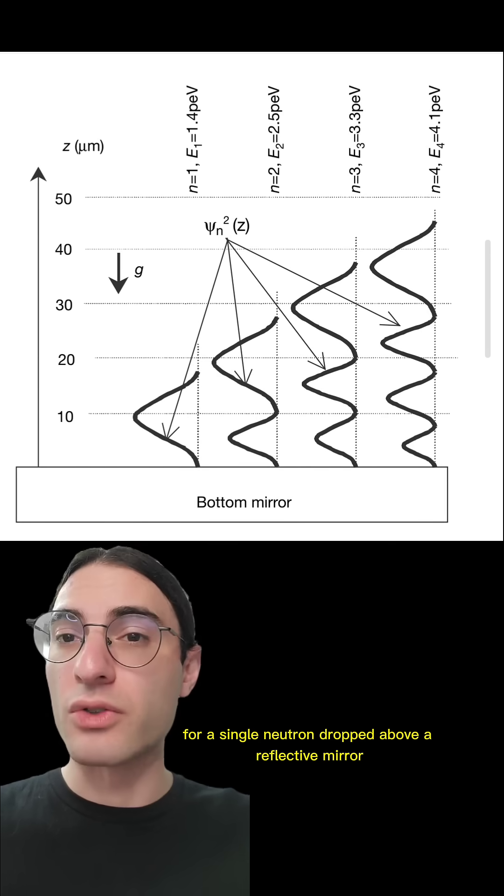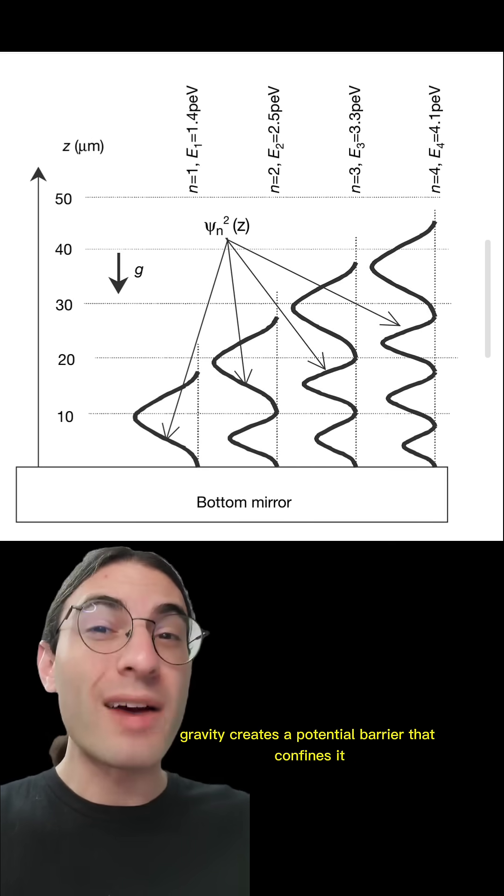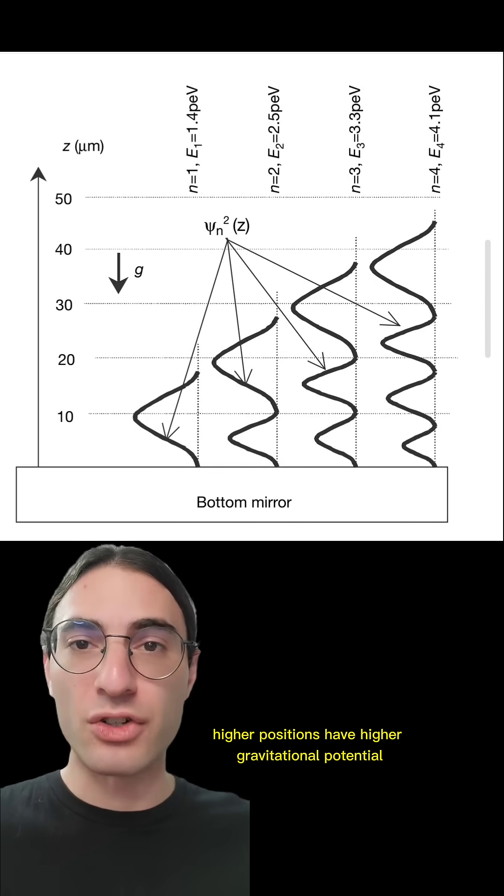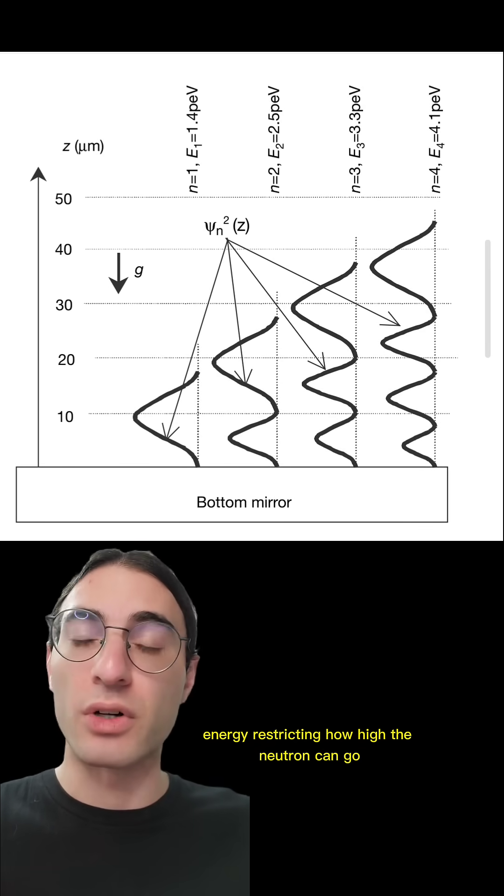And so for a single neutron dropped above a reflective mirror, gravity creates a potential barrier that confines it near the surface. Higher positions have higher gravitational potential energy, restricting how high the neutron can go.